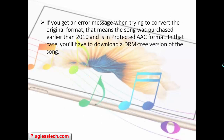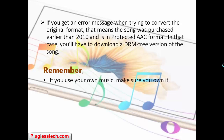If you get an error message when trying to convert the original format, that means the song was purchased earlier than 2010 and is in protected AAC format. In that case, you will have to download a DRM-free version of the song. Remember, if you use your own music, make sure it is DRM-free, as DRM-protected music will not work for ringtones.